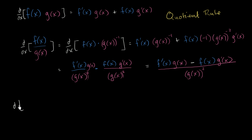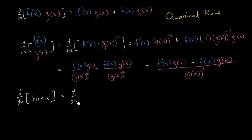So what's the derivative with respect to x? Let me write this a little bit neater. The derivative with respect to x of tangent of x. And you might say, hey Sal, I thought this was about the quotient rule. But you just have to remember, what is the definition of tangent of x? Well, tangent of x is the same thing as sine of x over cosine of x. And now it looks clear that our expression is the ratio — one function over another function.